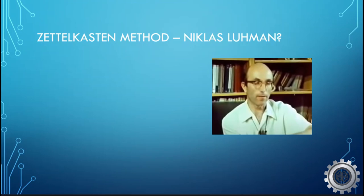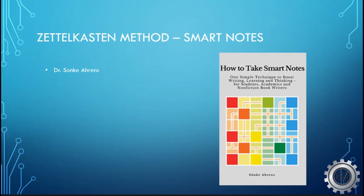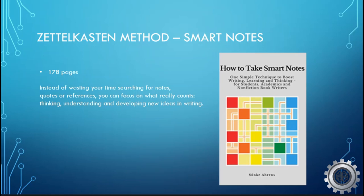While the creator of the Zettelkasten method is Nicholas Luhmann, it wasn't really presented to the world until much later. This is not due to Luhmann actively promoting it everywhere he went, but the fact that he had a small niche, being a German social scientist. It actually was not presented to the world primarily until the book 'How to Take Smart Notes' entered the public arena by Dr. Sönke Ahrens. While the book itself is around 178 pages and does focus on smart notes, at its core is the Zettelkasten method.